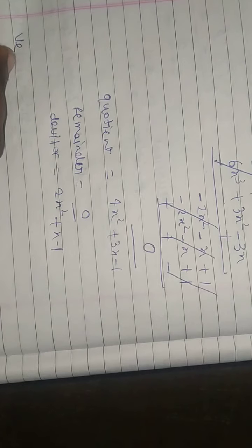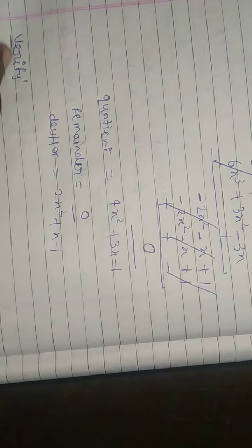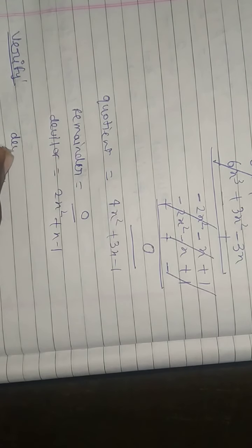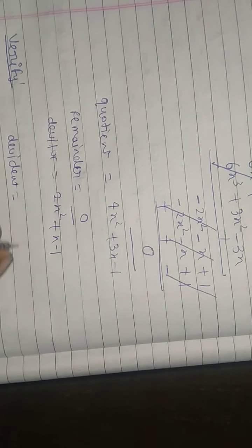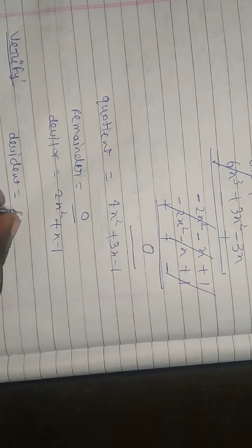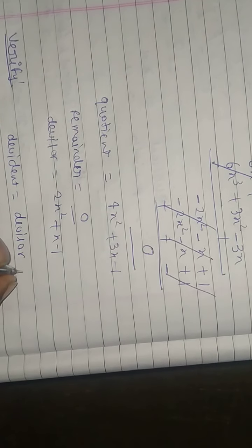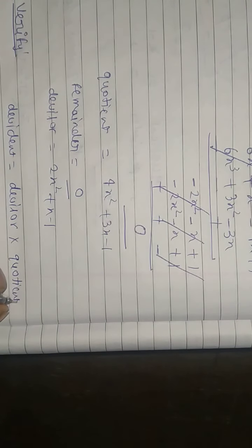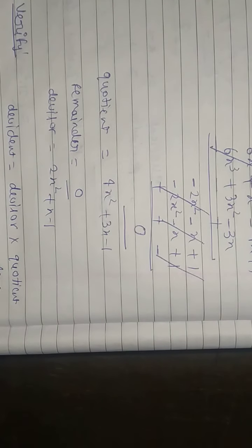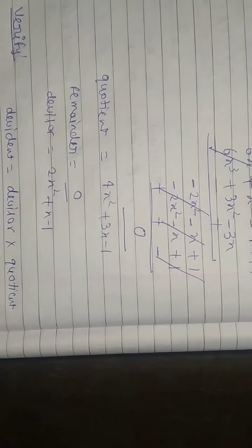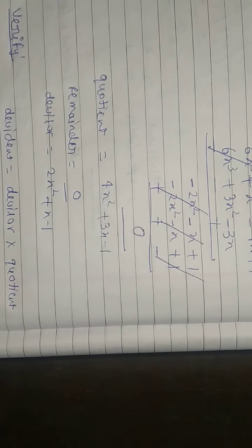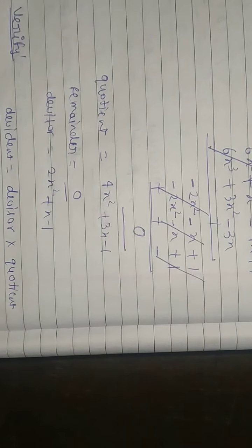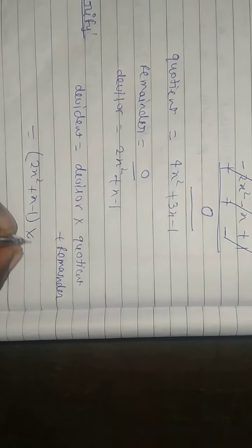So, verify: dividend equals divisor × quotient + remainder. Divisor is 2x² + x − 1. Multiply quotient: 4x² + 3x − 1. And remainder: zero.